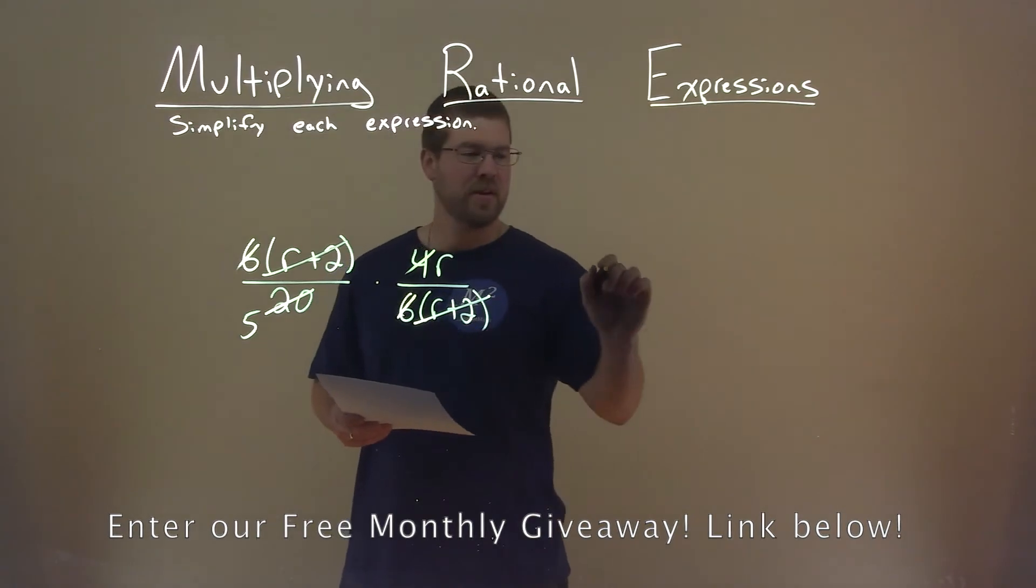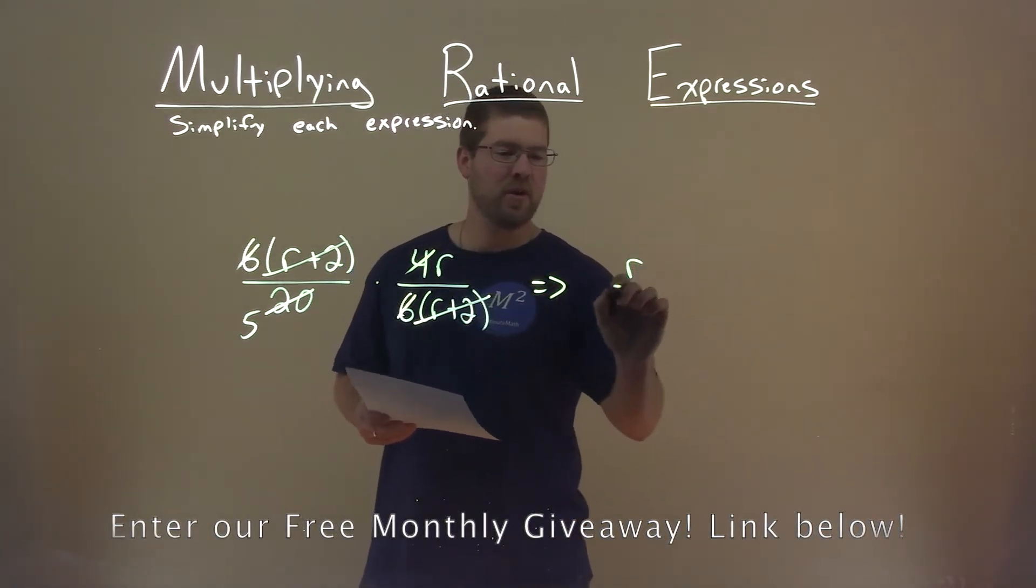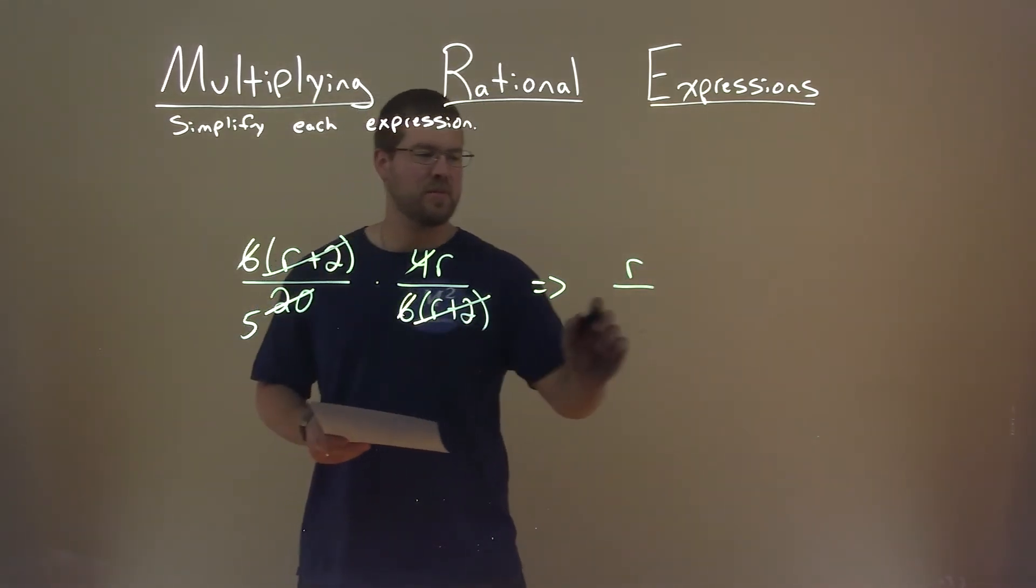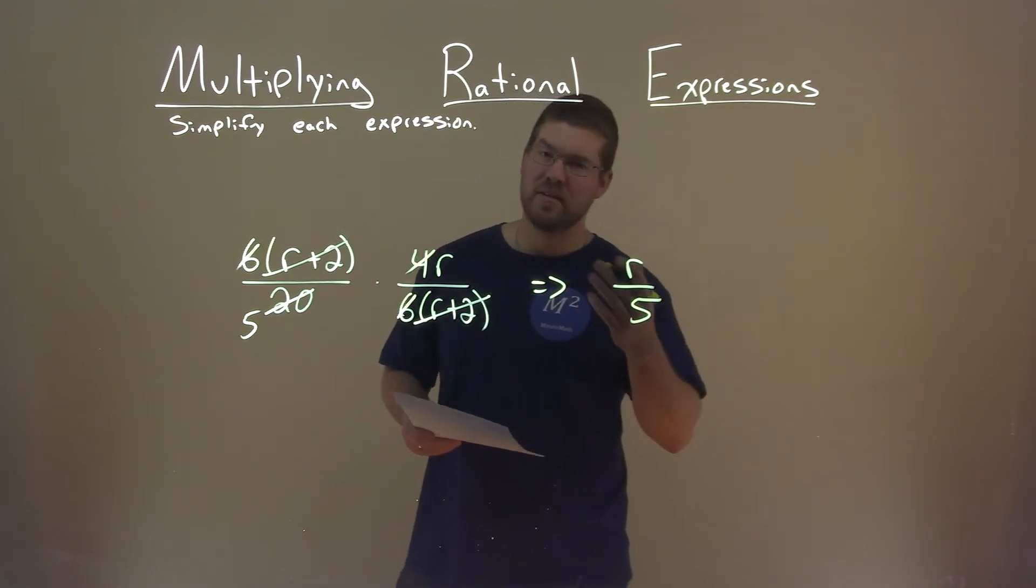On the numerator, multiply across, we just have a good old r. The denominator, we're left with 5, and that's it.